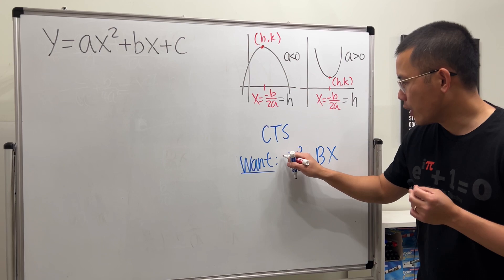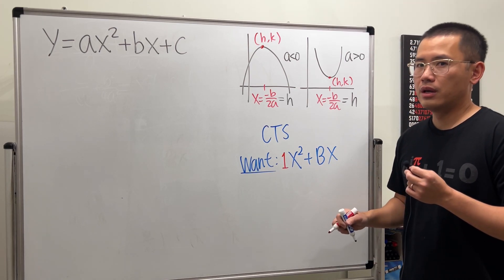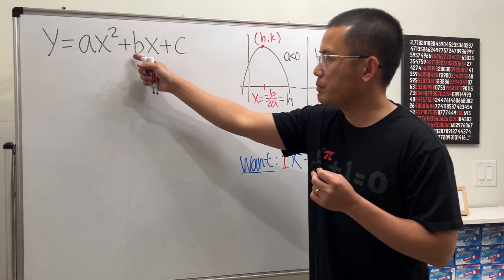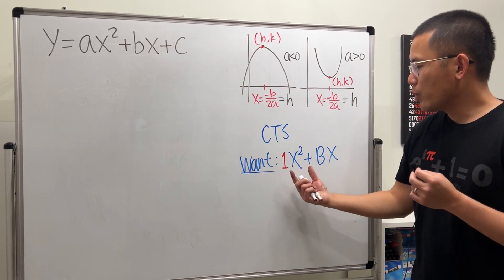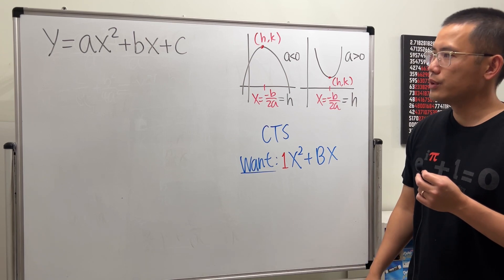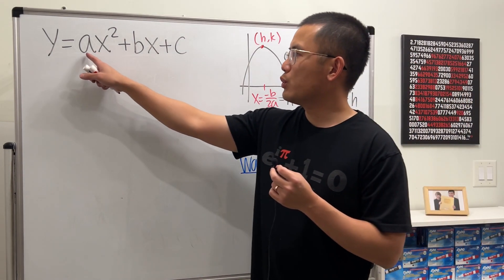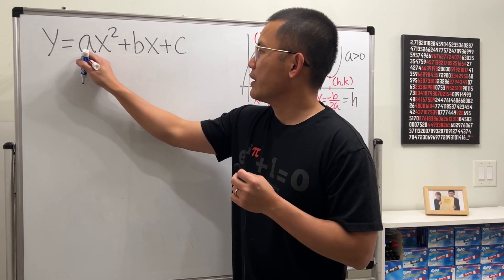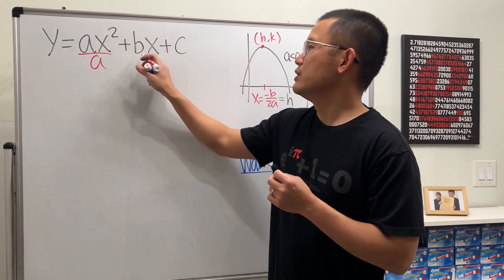We want to focus on just x squared plus bx. Notice, we want 1 in front of x squared. And then here I'm using capital B because I have lowercase b right here already. We just want this. Focus on this. Here we have a. We want 1. Don't worry. It's a small fix. Easy fix. Just divide everybody by a.